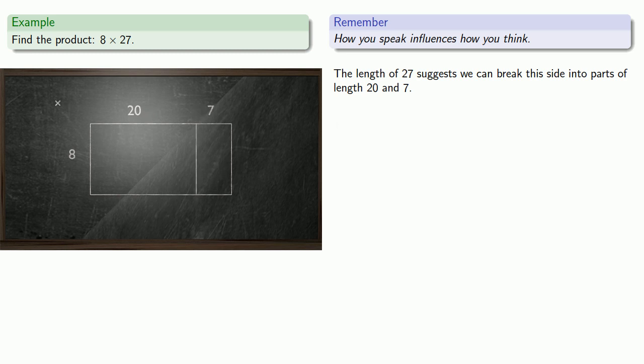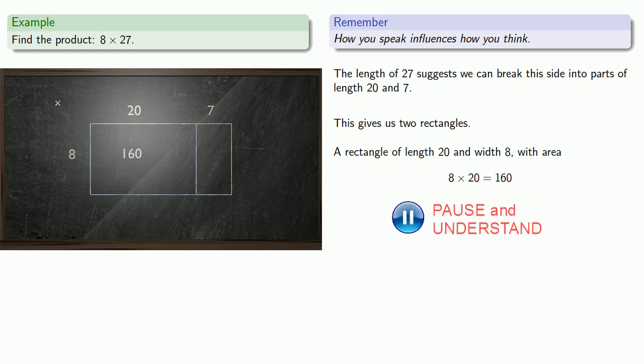And if we do that, this gives us two rectangles. A rectangle with length 20 and width 8 with area 8 times 20, which is 160. And another rectangle with length 7 and width 8 with area 8 times 7, or 56.